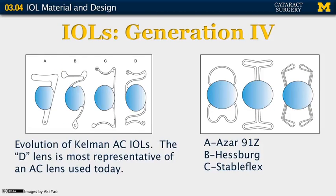The fourth generation of lenses are shown here with many examples of anterior chamber lens implants. The lenses on the left are examples of Kalman anterior chamber lens implants, and you will note that lens D is very similar to the modern anterior chamber lens. All of these are open loop haptics so that the haptics are quite flexible, and this flexibility allows the lenses to be very well tolerated in the anterior chamber. Lenses on the right are other versions of anterior chamber lens implants that were briefly in use. These lenses all have closed loop haptics, and they were all associated with corneal endothelial failure and issues with chronic inflammation.